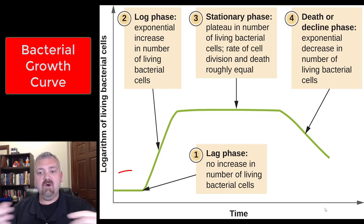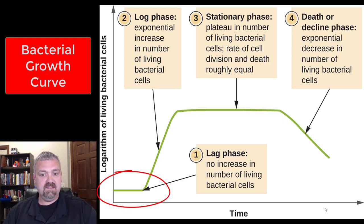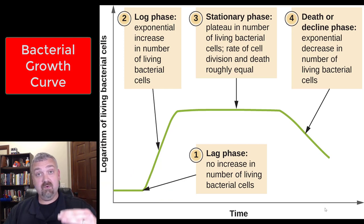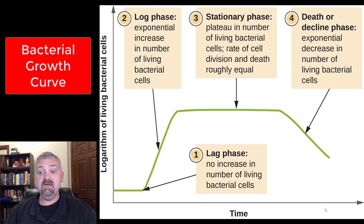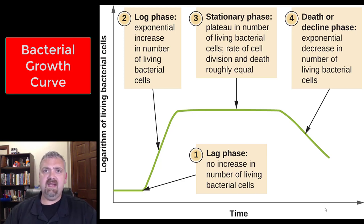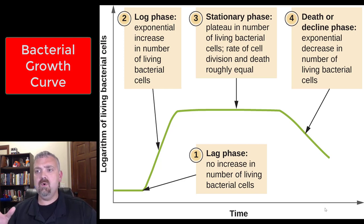Let's start with the lag phase. You'll notice it's a horizontal line because we're not seeing a logarithmic change in the population of bacteria. There's no increase in the number of living bacterial cells, but it doesn't mean they're not doing anything. This is very important.